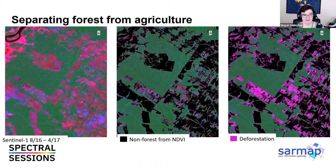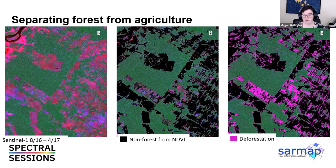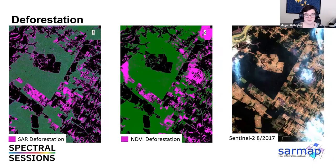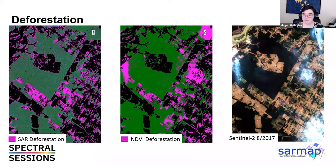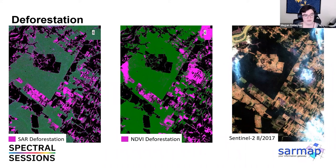SARMAP then separated out non-forest using NDVI and filled out the areas that were deforestation, including places where people cleared forest to get more fields for agriculture. Using the change in NDVI from optical data, those areas are separated out. Another example shows SAR deforestation versus NDVI deforestation and a comparison to Sentinel-2 data. This process is absolutely a data fusion process — we're taking two different products and making a usable output. The optical NDVI is used to remove a lot of mess and make the process viable, and the SAR data provides the change detection response.